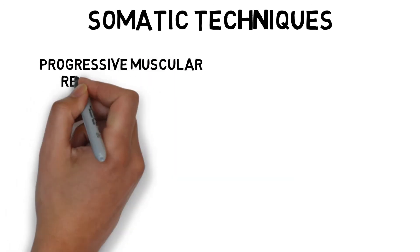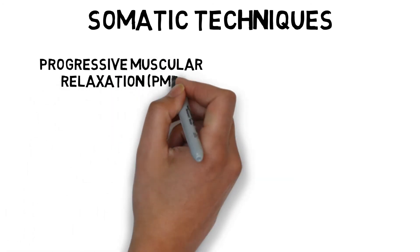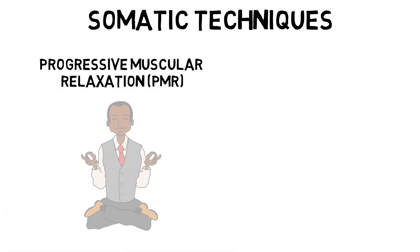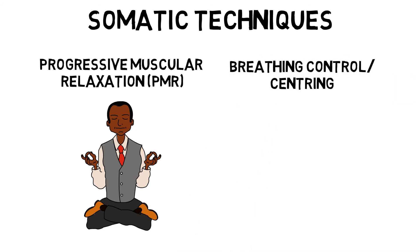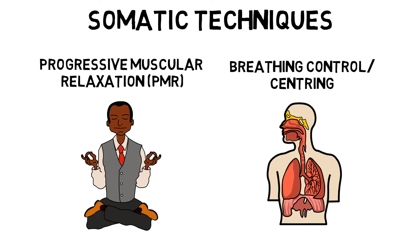Somatic techniques include progressive muscular relaxation, which is learning to be aware of tension present in the muscles and removing it through relaxation, often combined with breathing control. Breathing control, or centering, focuses on maintaining a steady breathing rate to redirect attention and reduce stress.